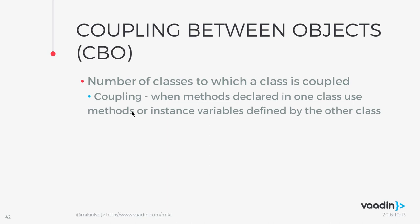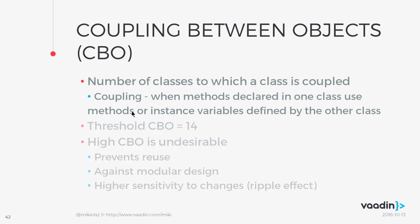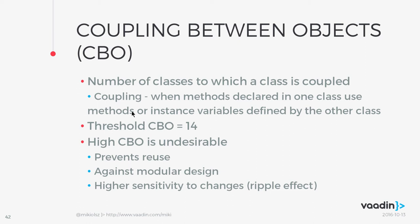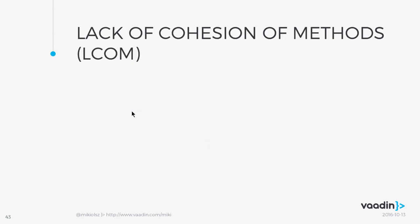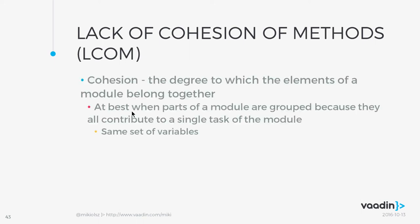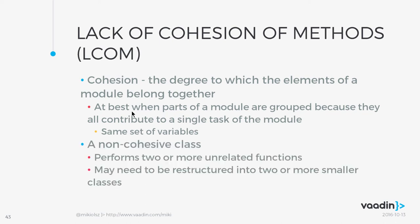There is a threshold for CBO. High coupling between items prevents reuse because everything has links, and it works against modular design. The ripple effect means that a change in one place requires changes in many others, and you're likely to miss some. The sixth metric is Lack of Cohesion of Methods (LCOM), about grouping functionality so that a module performs a single task with the same set of variables. A non-cohesive class performs two or more unrelated functions and should be divided into two or more smaller classes.